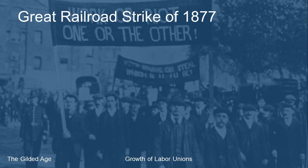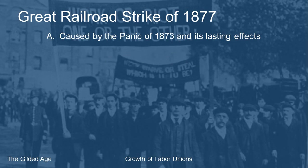Now we'll look at some important strikes — not an exhaustive list. The first is the Great Railroad Strike of 1877, which has its origins in the Panic of 1873 and the economic depression that followed for several years. During the Panic, railroads cut wages — businesses told employees they weren't making as much money and so had to cut pay or lay people off.